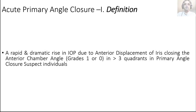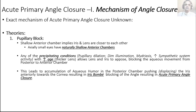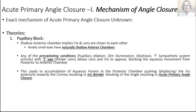We refer to risk factors rather than etiologic factors because we don't really know the exact mechanism by which a primary angle closure suspect becomes an acute primary angle closure. We have two theories: a very popular theory — the pupillary block theory — and a less popular one — the angle crowding theory. We'll do both because I like the less popular one.